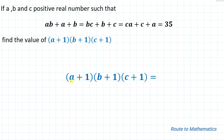So we are asked to find (A+1)(B+1)(C+1), and the answer is 216. I hope you have understood the solution. Please subscribe to my channel and click the bell icon for more interesting videos. Thank you.